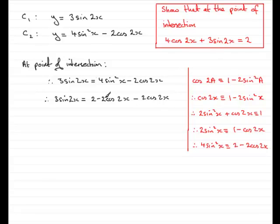Well, I can see that we've got minus 4 cos 2x here. So if I add that to both sides, then I'm going to have what we need. We're going to have 4 cos 2x plus that 3 sine 2x just equals that 2 there. And there you have it.